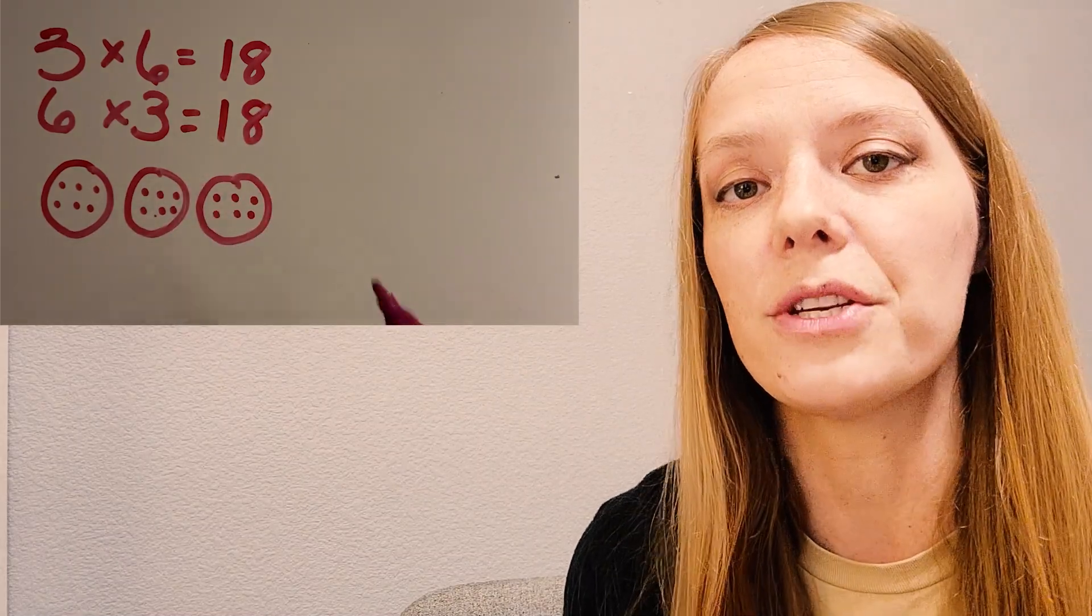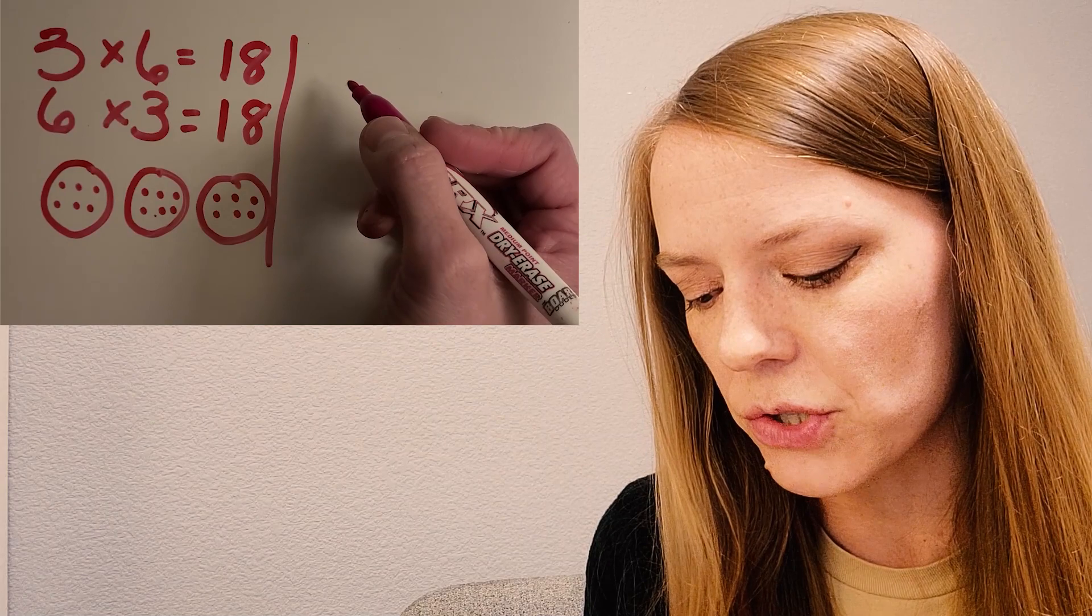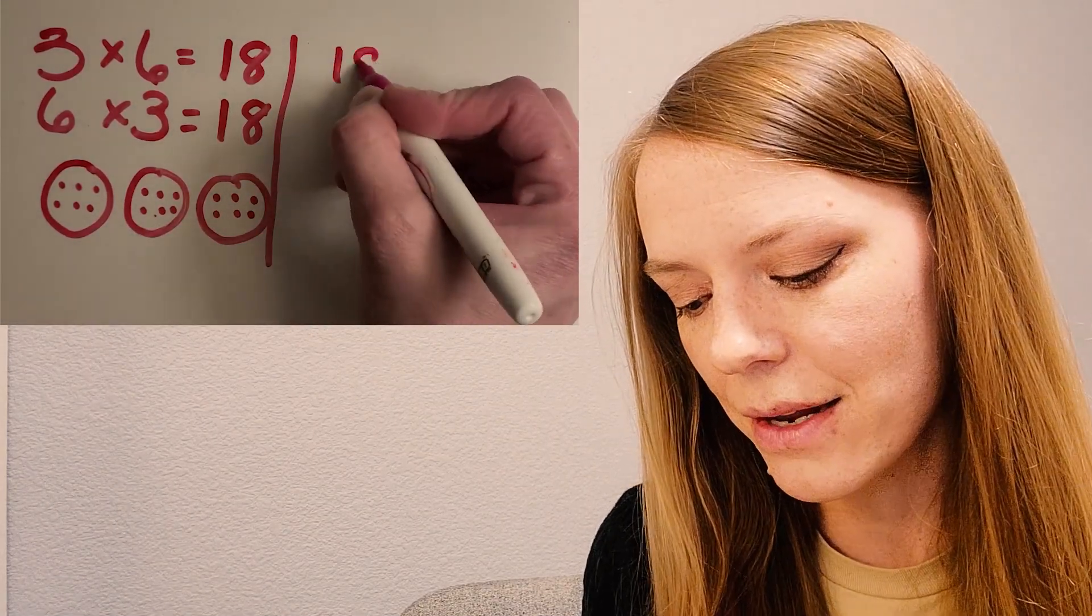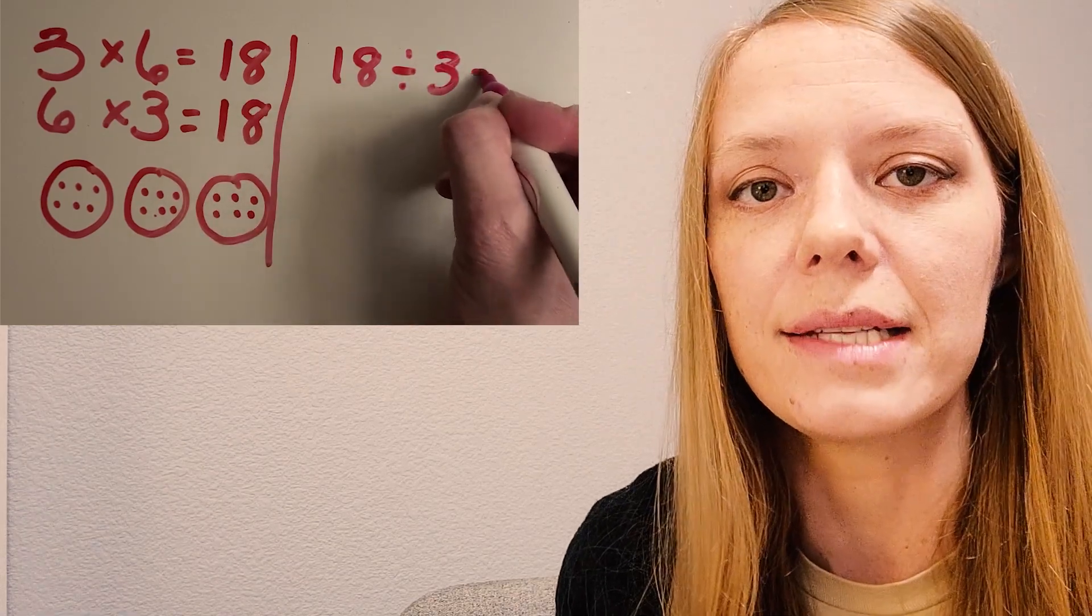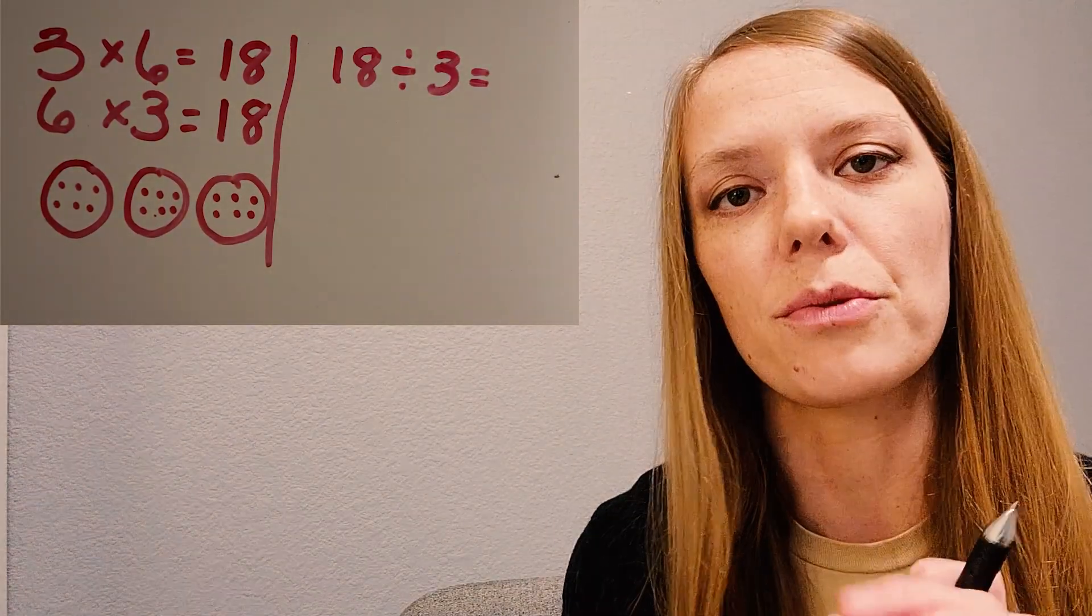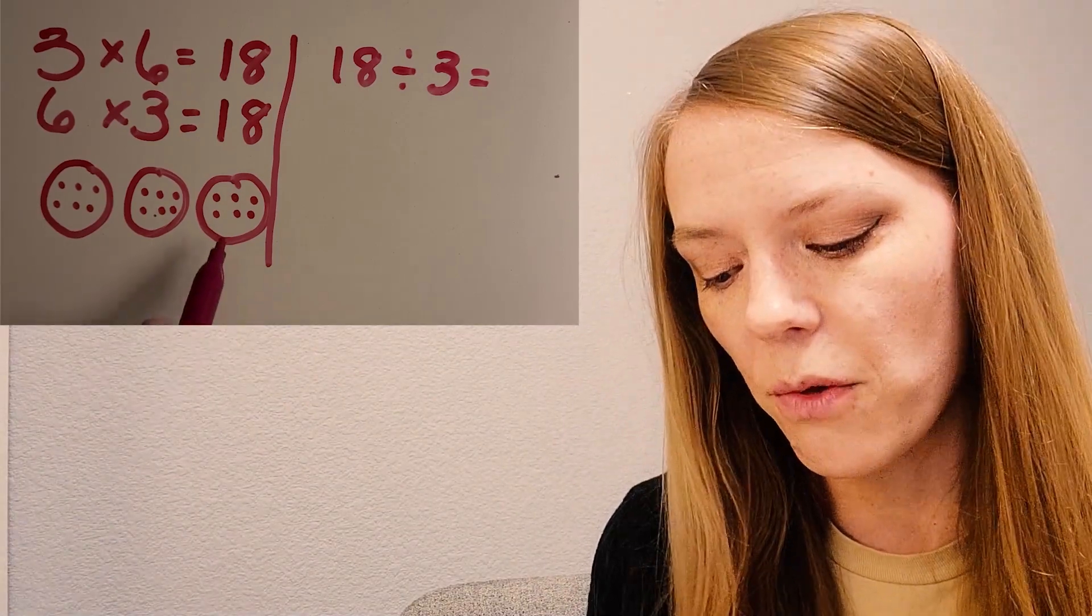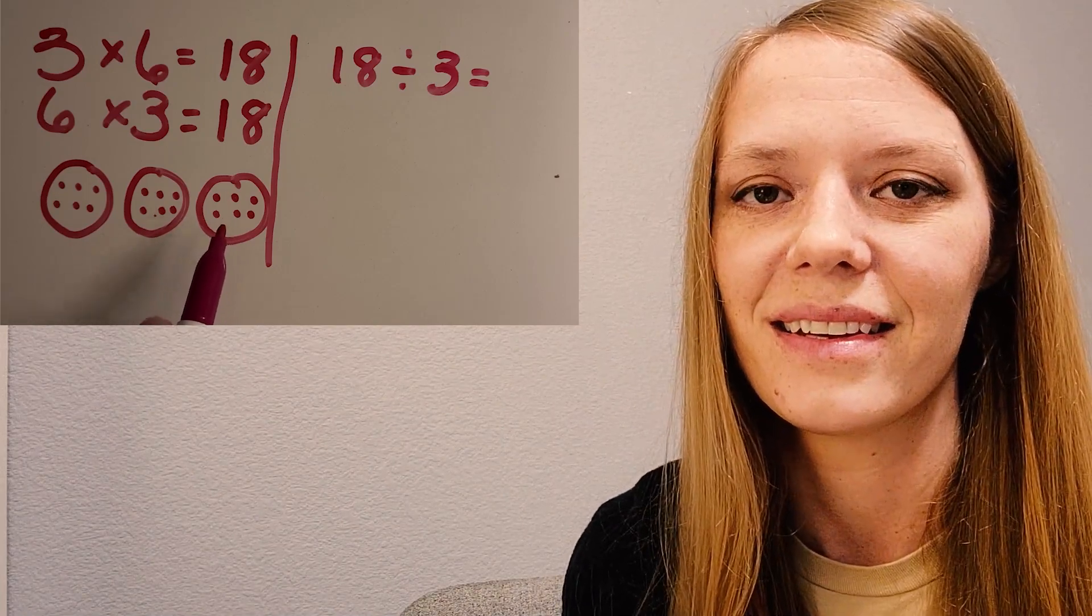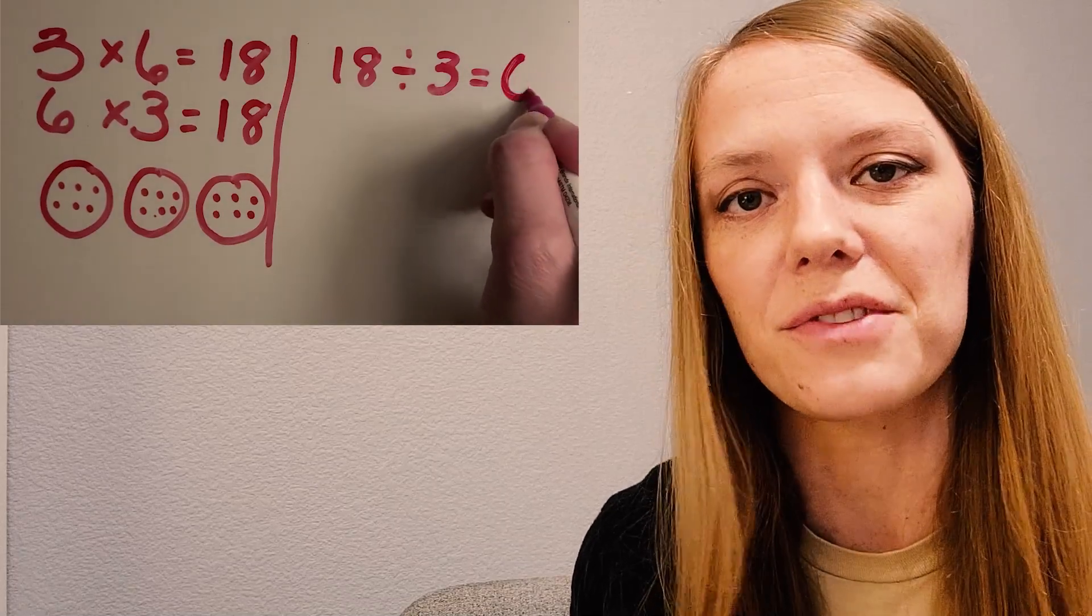Now let's try the division part of the fact families. So remember, we can use that picture to think about 18 divided by three, or really, that means 18 separated into three groups. Okay, and what would the answer be? How much is in each group or one group? Okay, awesome. There's six, the picture gives it away.